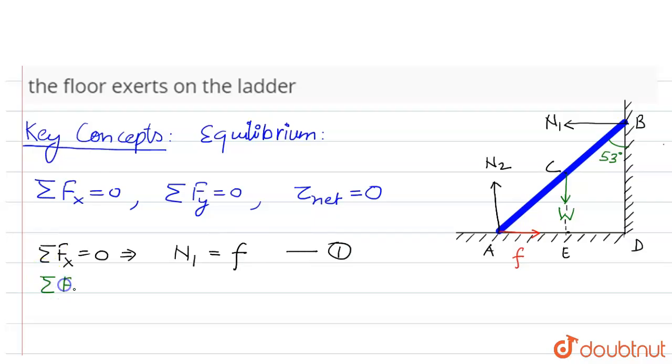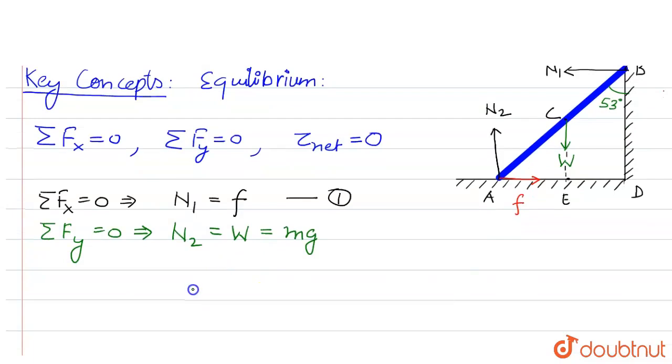Now we'll use our second key concept which says ΣFy equals zero. So in the vertical direction we have two forces, that is N2 and W. So from here we'll get N2 equals W. W is the weight of the ladder which is given as mg.